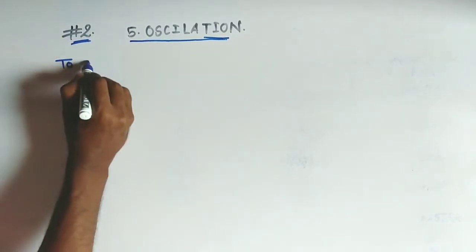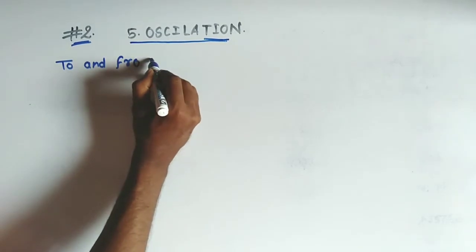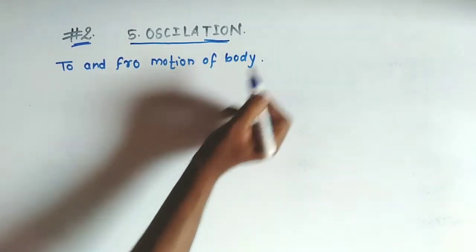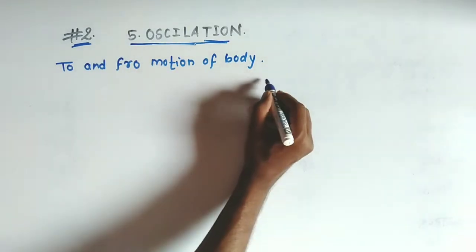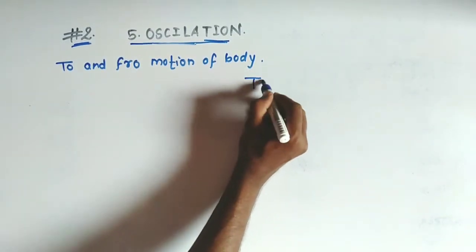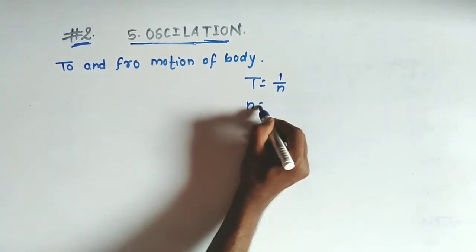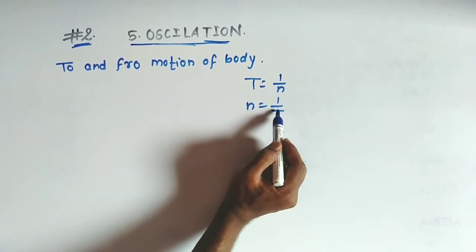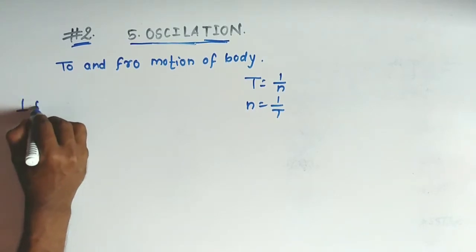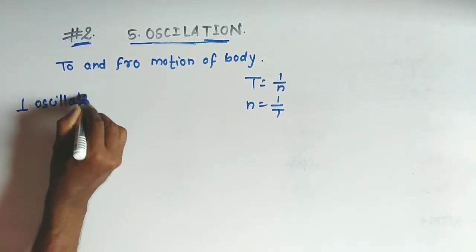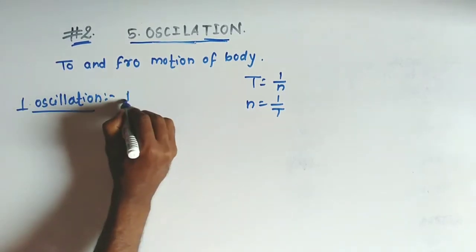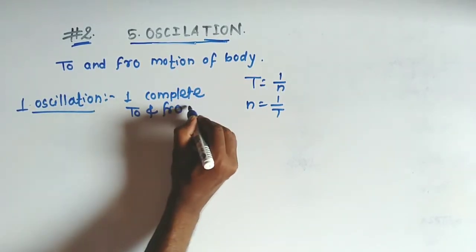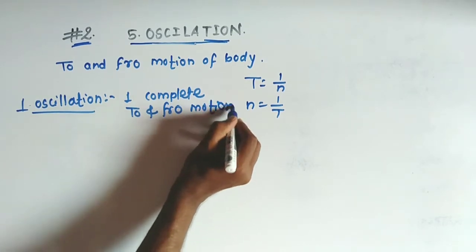Oscillation means a to-and-fro type of motion. The to-and-fro motion of a body is called oscillation. Similar to rotational dynamics, we have terms like time period, which is the reciprocal of frequency, and frequency is the reciprocal of time period. One oscillation means one complete to-and-fro motion of the body.